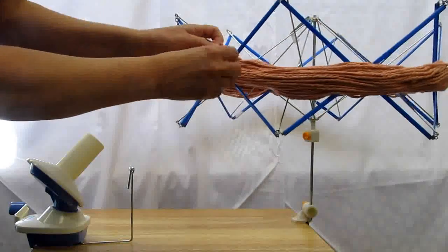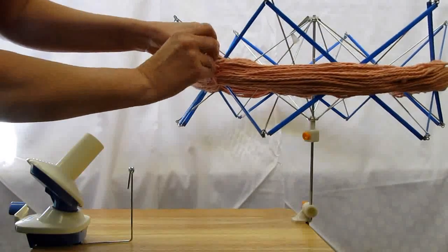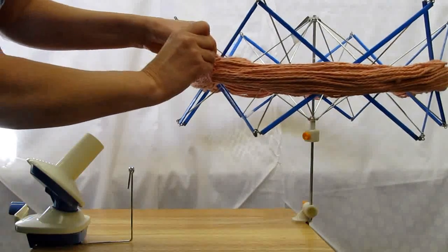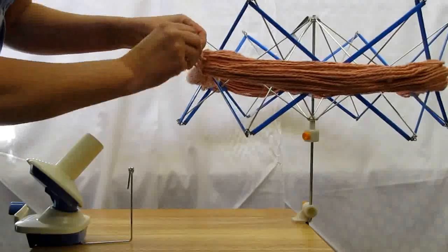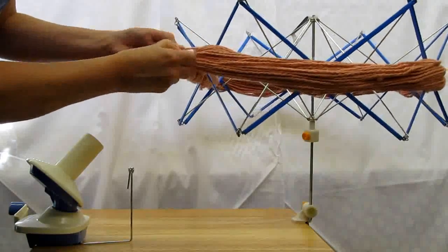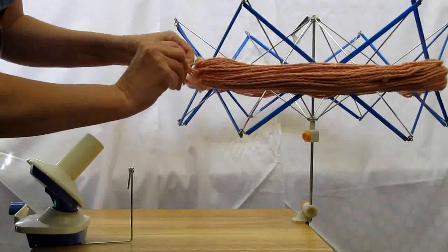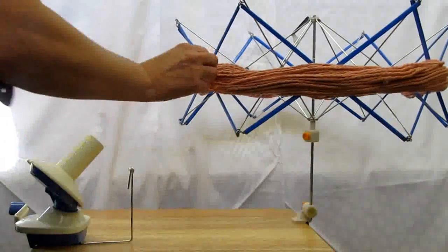Then you look for the place where it's knotted to be tied together. You untie it. If you're impatient, you can use scissors at this stage. I'm just about getting there.